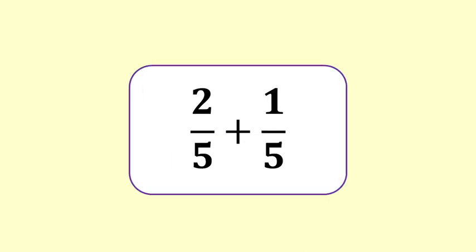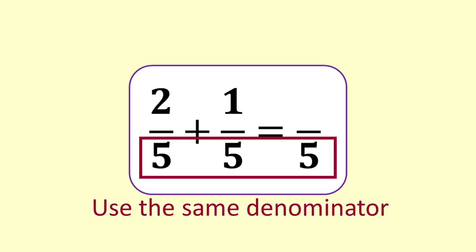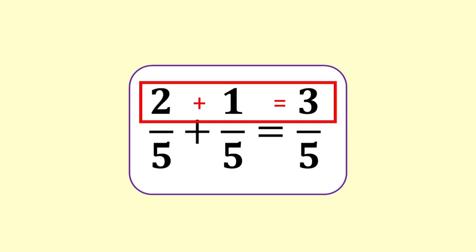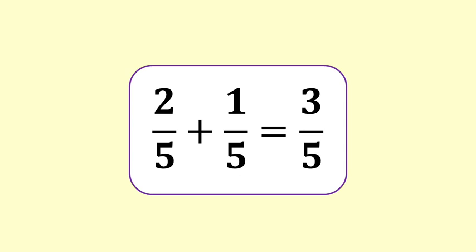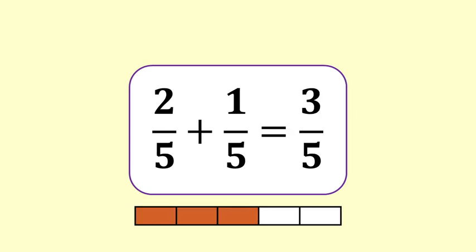Here is an example: 2 fifths plus 1 fifth. The denominator for the answer is the same as the denominators of the fractions being added. Our answer will be fifths. We add the numbers on the top — the numerators. 2 plus 1 equals 3. So 2 fifths plus 1 fifth equals 3 fifths. You can see it represented here with a bar model.